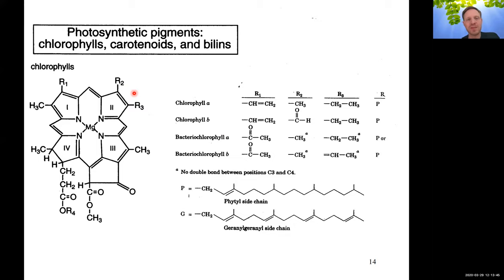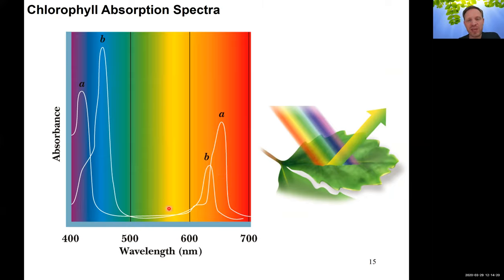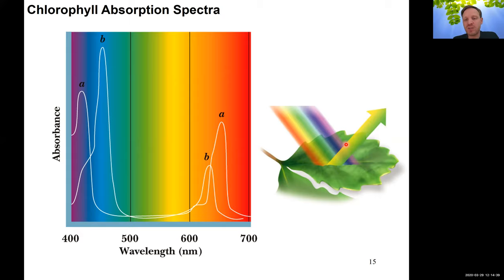Chlorophyll primarily absorbs blue/violet and red/far-red wavelengths of light, but does not absorb green and light-yellow wavelengths — those are reflected. That's why leaves appear green to us.